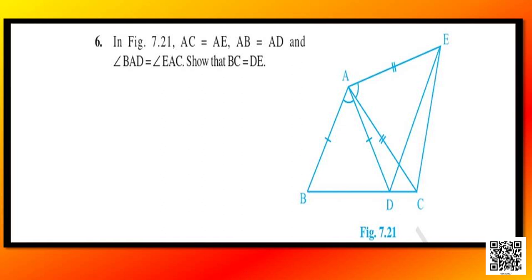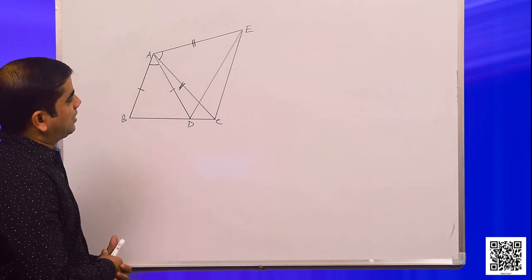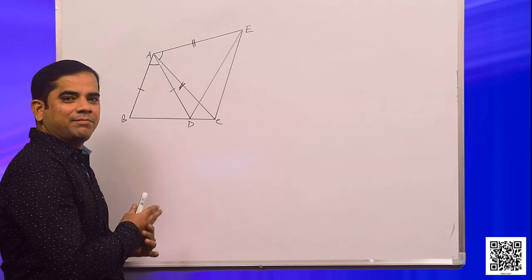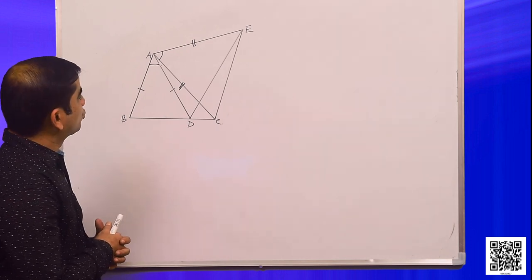It says, in figure 7.21, AC is equal to AE, AB is equal to AD, and angle BAD is equal to angle EAC. We need to show that BC is equal to DE. Let me draw the diagram first. I have drawn a similar diagram to the one given in your book.